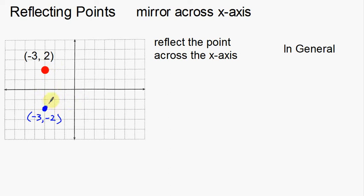It doesn't look too terribly difficult, but one thing you've got to remember is that the distance between the original point and the axis that we are reflecting across — this distance is two. The distance between the new point and the axis also has to be two. Got to remember that.